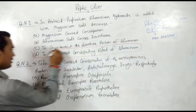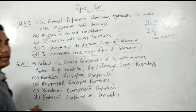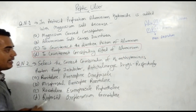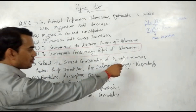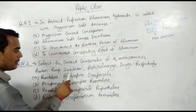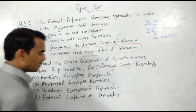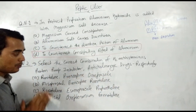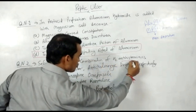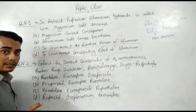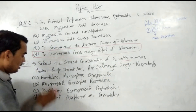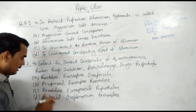The next question: select the correct combination of H2 antihistaminics, proton pump inhibitor, and anticholinergic drugs. We need to place drugs in the correct category. H2 blockers include ranitidine, famotidine, and roxatidine. We need to identify which options contain ranitidine and roxatidine.